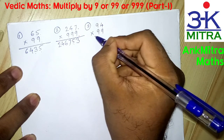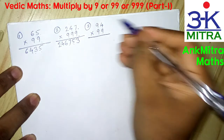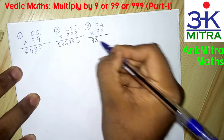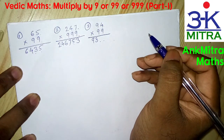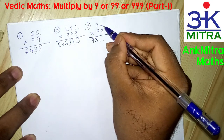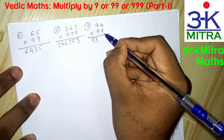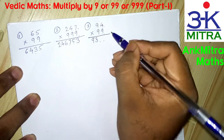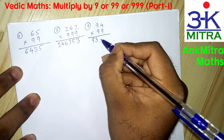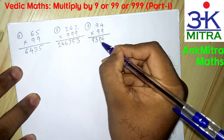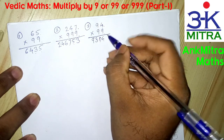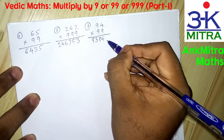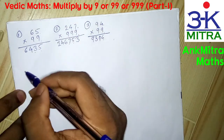Next example: multiply 94 by 99. In similar fashion we reduce 1 from 94 to get 93. We then have 2 places to fill, which will be 100 minus 94. Subtracting 94 from 100 we get 6, but we write it as 06 because we need to fill 2 places. So 94 multiplied by 99 gives us 9306.